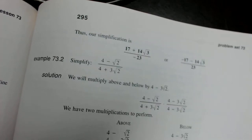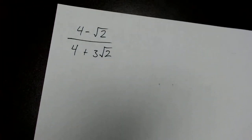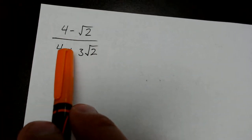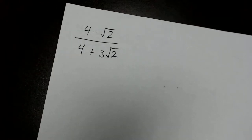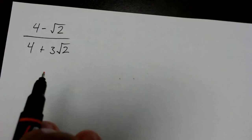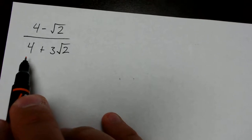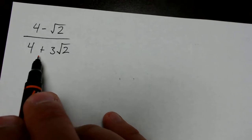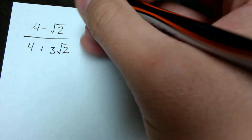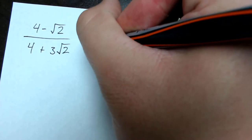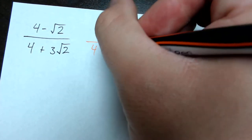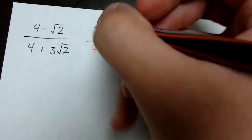We'll start with Example 73.2. The major difference between these problems that makes them a little bit more difficult than previous versions is we have multiple terms in both the numerator and the denominator, which means we're going to have to be FOILing on both. We have to first identify our conjugate, which is going to be 4 minus 3 times the square root of 2.